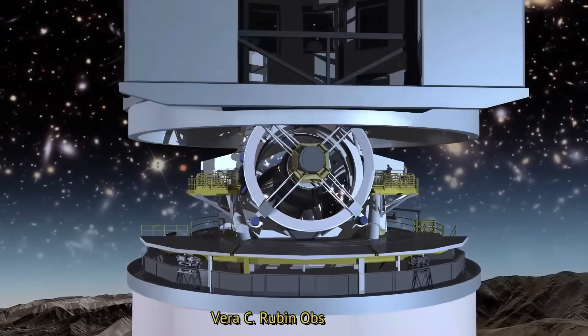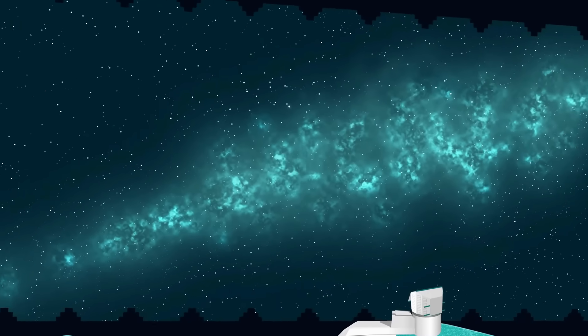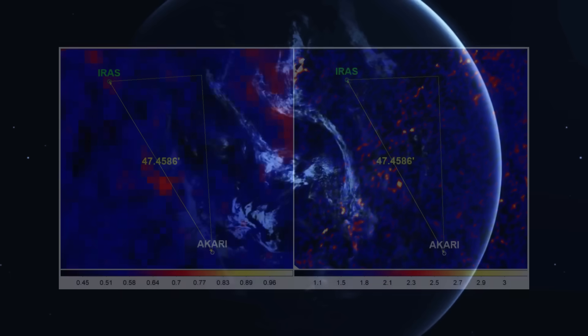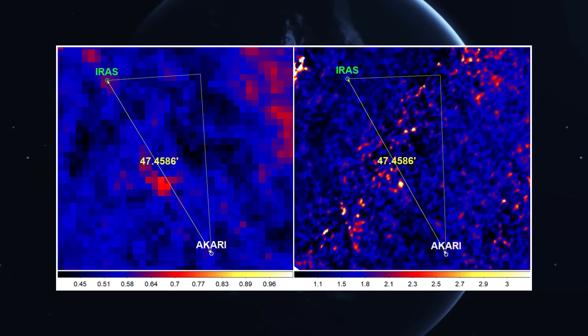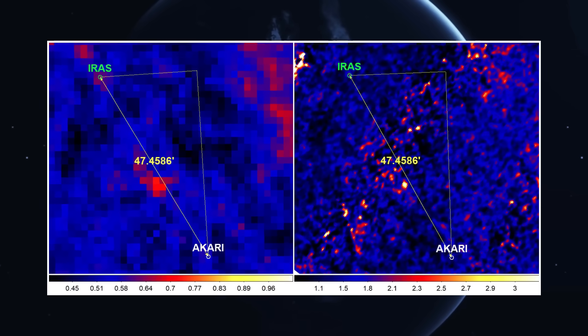And soon, the Vera C. Rubin Observatory will come online, offering even deeper and broader surveys of the sky. So it's possible, even likely, that if this object is real and still glowing faintly, we'll see it again.